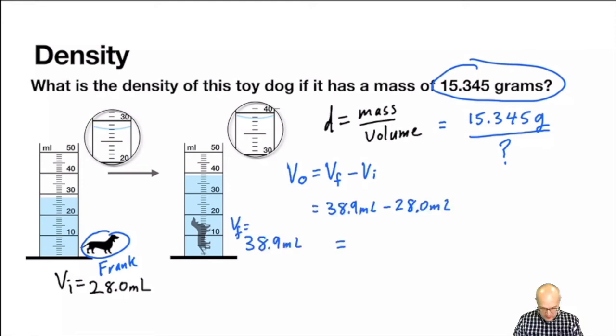Calculate V object equals 10.9 milliliters. And that will be placed here, equals 1.41 grams per milliliter.